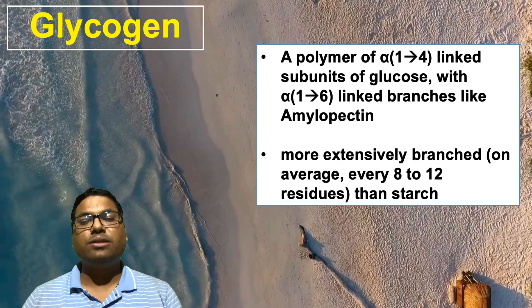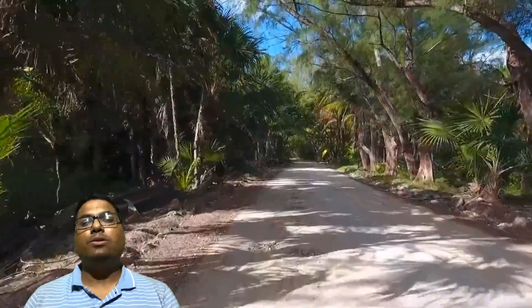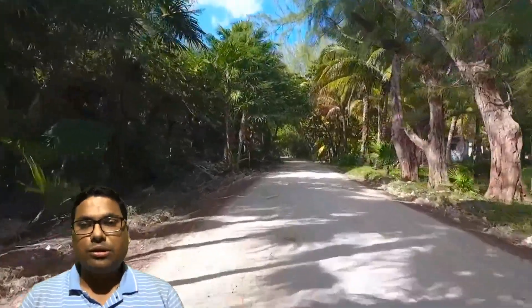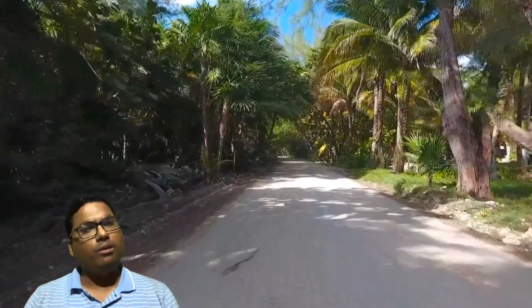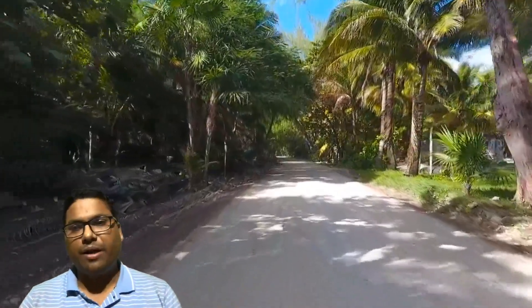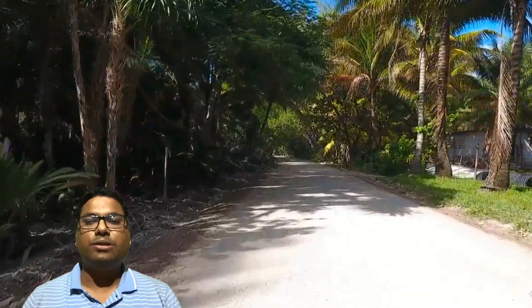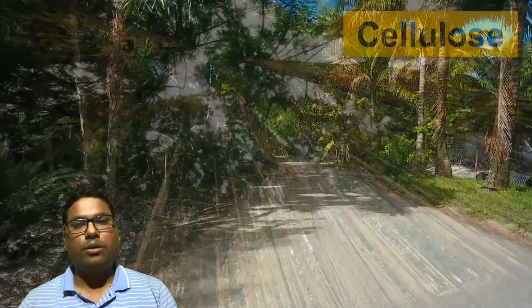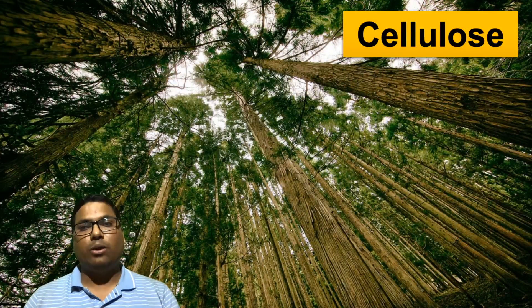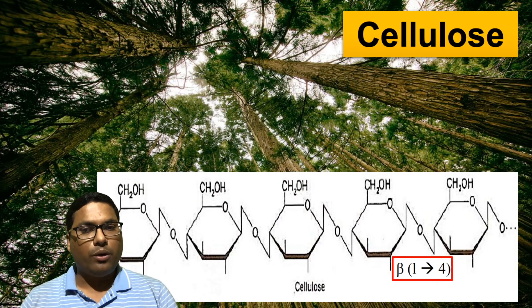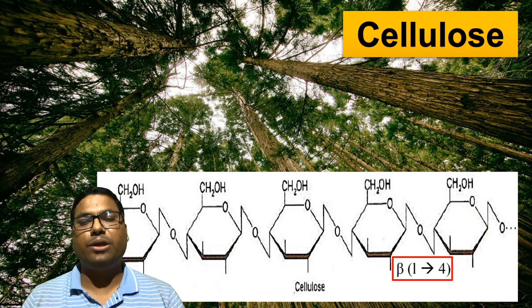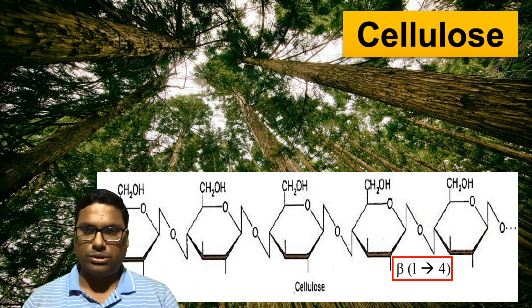Coming to the next example of polysaccharide, let us go to the jungle. What we observe is a very important polysaccharide found in nature — I am talking about trees. All trees have a very important polysaccharide called cellulose. Cellulose is a linear polymer made up of glucose units linked with the beta 1,4 glycosidic bond.